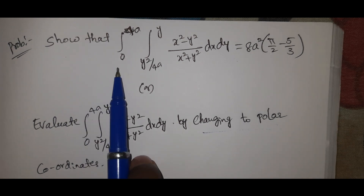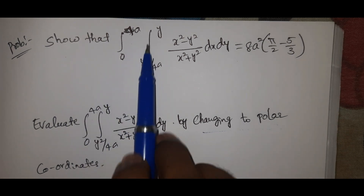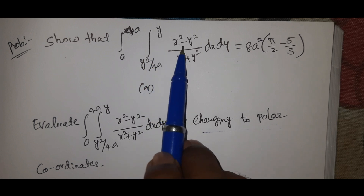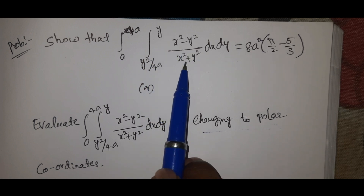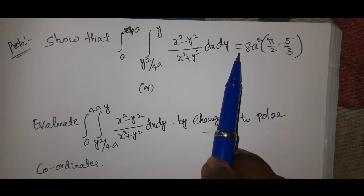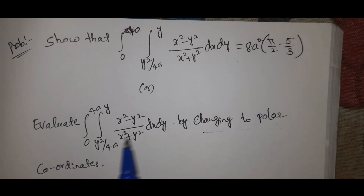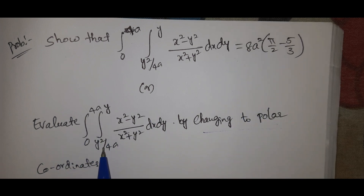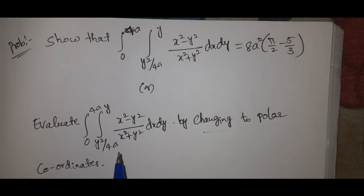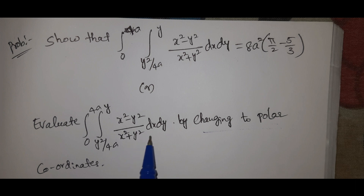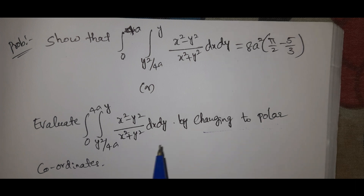Show that the integral from 0 to 4a, integral from y²/4a to 2y, of (x² - y²)/(x² + y²) dx dy equals 8a²(π/2 - 5/3). Or, evaluate the same integral by changing to polar coordinates.